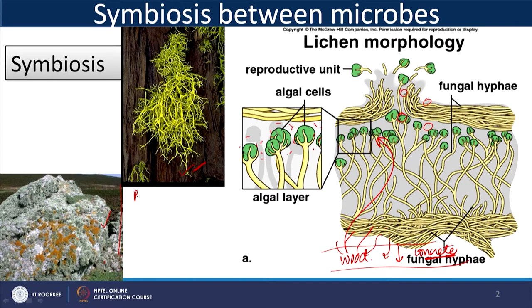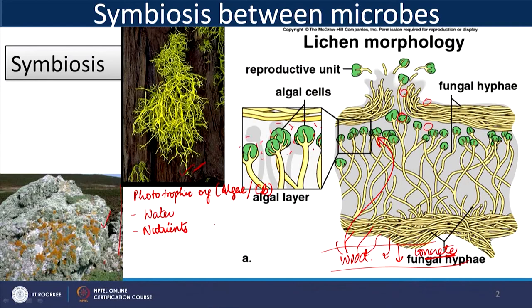So if we talk about the phototrophic organism — whether algae or cyanobacteria — the benefits are: it receives water which it would not receive if trying to grow on a rock or wall, and it receives nutrients, especially if growing on wood or the bark of a tree. So if you see algal growth on your wall and it is not very wet, you can be assured there is some kind of phototrophic microbiome in it. Now, the obvious question is: what is the fungus benefiting from this relationship?